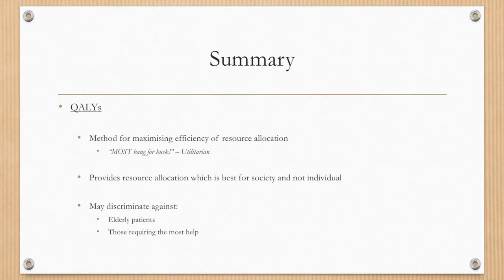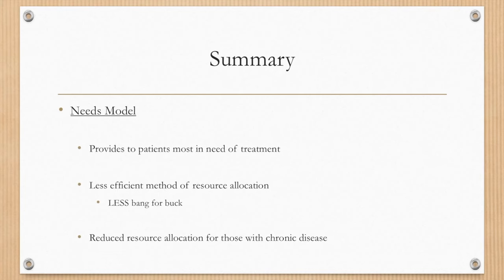Let's summarize what we've reviewed. QALYs, or quality adjusted life years, are a method of maximizing efficiency of resource allocation — essentially giving us the most bang for our buck, and it's a utilitarian concept. It provides resource allocation best for society, but not necessarily for the individual. And because it looks at healthy life years gained, it can discriminate against elderly patients and those who require the most help. The alternative, the needs-based model, provides patients most in need with the treatment they require. It is a less efficient method of resource allocation — you get less bang for your buck — and there is also an associated reduction in resource allocation to those with chronic disease.